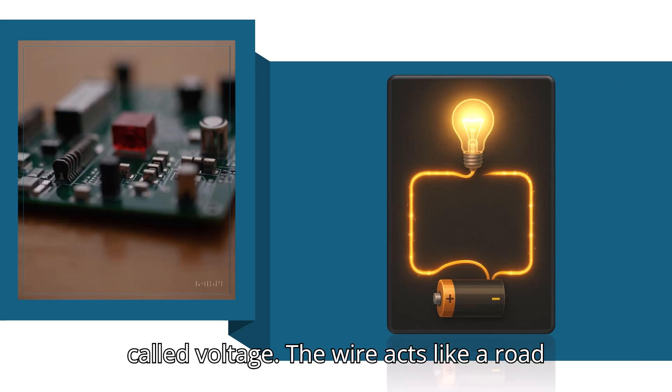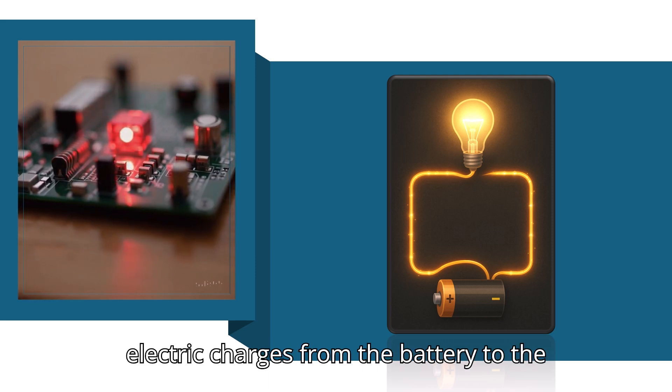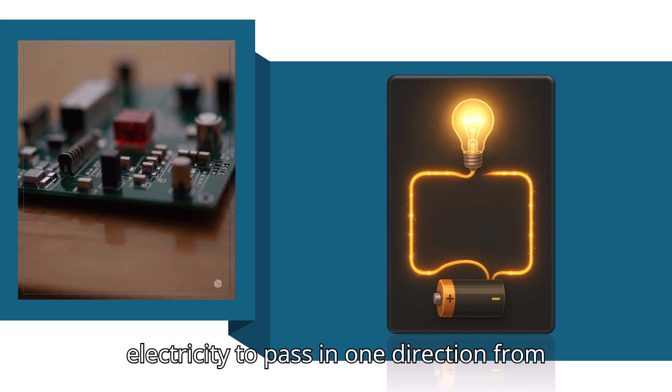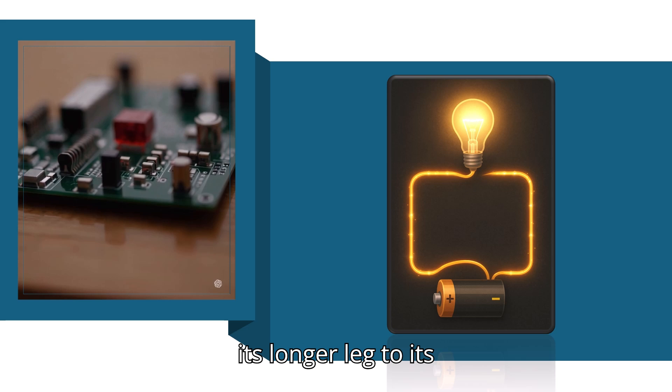The wire acts like a road for the electricity. It guides the electric charges from the battery to the LED. The LED only allows electricity to pass in one direction from its longer leg, anode (positive side), to its shorter leg, cathode (negative side).